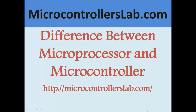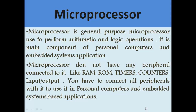A microprocessor is basically simply a CPU. It does not have any peripherals connected to it like RAM, ROM, timers, counters, or other peripheral devices like input/output ports. A microprocessor is simply a processor which performs arithmetic and logic operations — it fetches data, fetches addresses, and performs logical operations. Other than this, microprocessors do not have any internal RAM, ROM, timers, or counters.